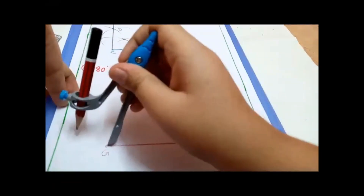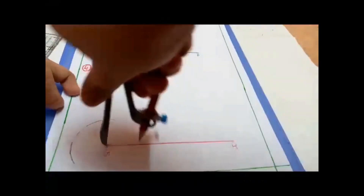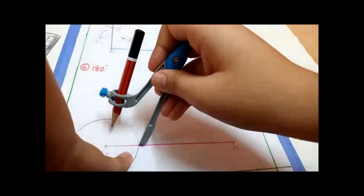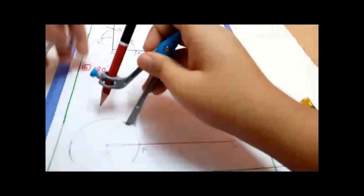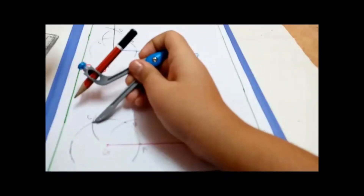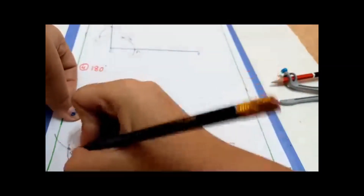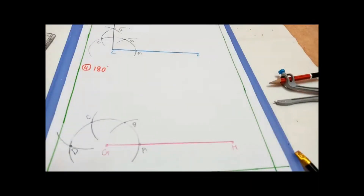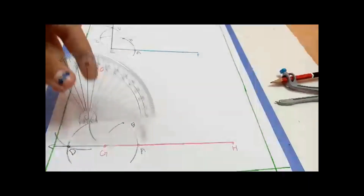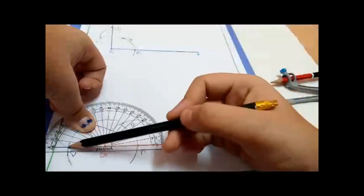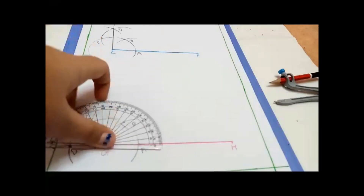Take a compass of any radius and draw an arc. With the pointer there, draw another arc — this gives 60 degrees. Mark the points; marking the points is very important, otherwise we may lose marks in construction. Continuing: here is 120 degrees. For 180 degrees, with the same radius put the point at 120 (point C) and draw an arc. Mark this point and join G and D. We get 180 degrees — angle DAH is a straight line.